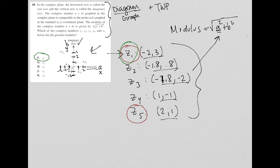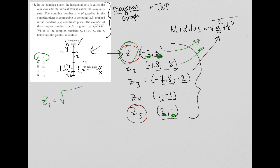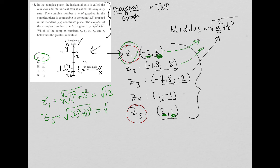Hopefully that makes sense. Z1 is going to beat out all the other options because both of its components are large. Its A value matches Z5's A value, so that alone wouldn't give it the win. But if I compare Z1 to Z5 using the B value — 3 squared is 9, but 1 squared is only 1. For Z1, the modulus would be the square root of negative 2 squared plus 3 squared, which is the square root of 4 plus 9, so square root of 13. For Z5, the modulus would be the square root of 2 squared plus 1 squared, which is the square root of 4 plus 1, which is only square root of 5. So that's the reason why Z1 is the best answer.